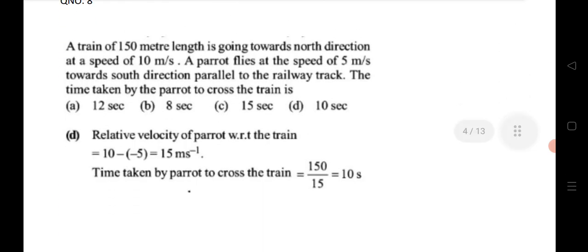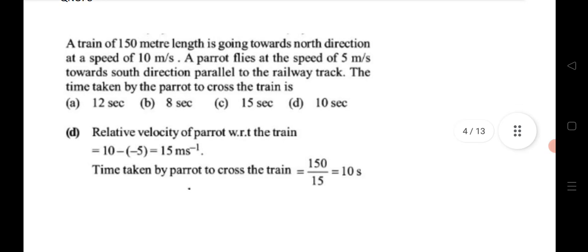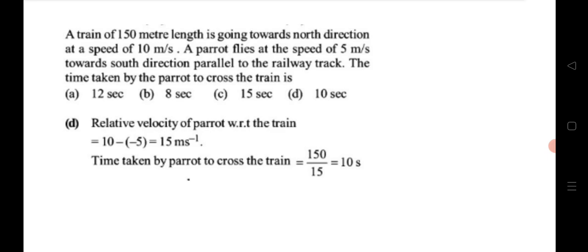Eighth question: a train 150 meters in length is going north at a speed of 10 m/s. A parrot flies at 5 m/s towards south, parallel to the railway tracks. Using the relative velocity formula v_A − v_B, the relative speed comes to 15 m/s. Using time = distance / speed, substitute to get the time taken for the parrot to cross the train.